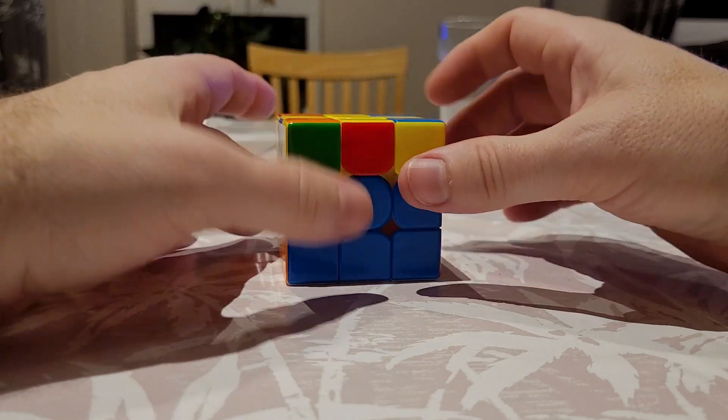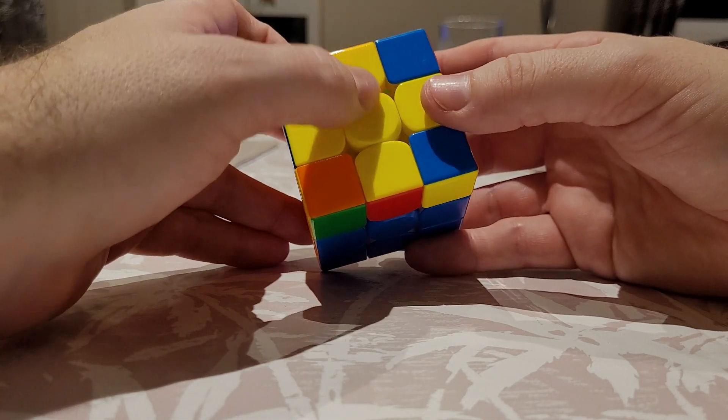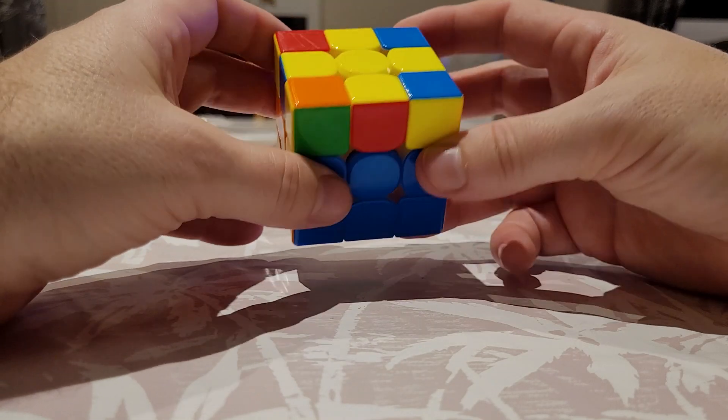What that means is if we get this right, there'll be a shape of a fish on the top here before we fix it. I'm going to show you what the move is.